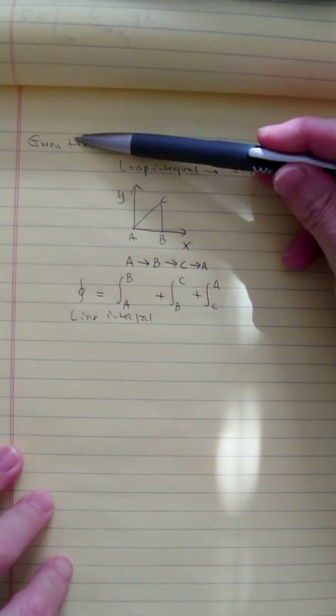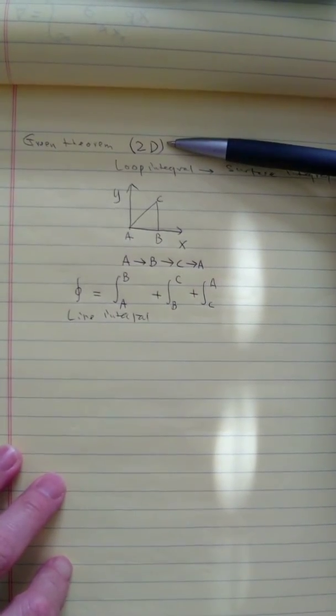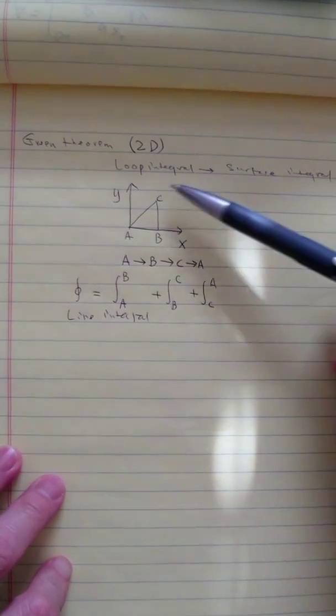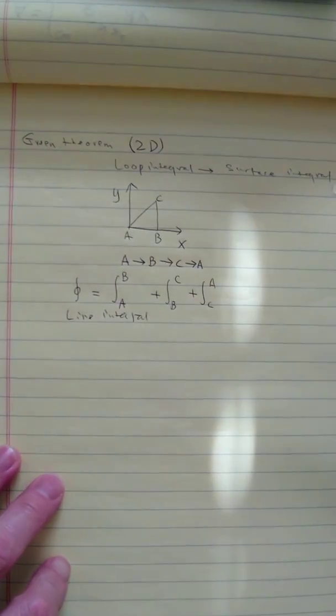So remember the Green theorem is about two-dimensional. Essentially it's a surface integral compared to the loop integral or the other way around.